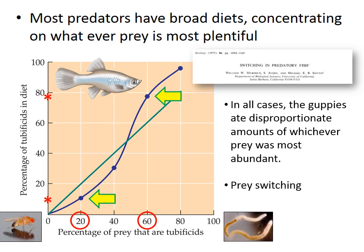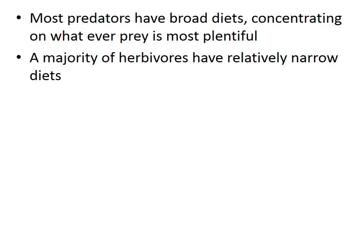For example, snowshoe hares may account for up to 80% of the diet of a lynx, even when hares constitute only 20% of available food. So while most predators have broad diets and concentrate foraging on whatever prey is most plentiful, a majority of herbivores have relatively narrow diets.